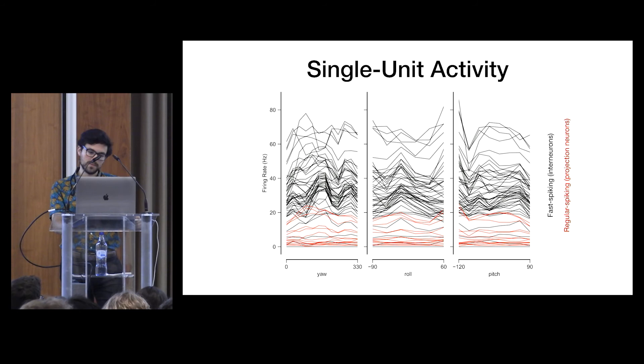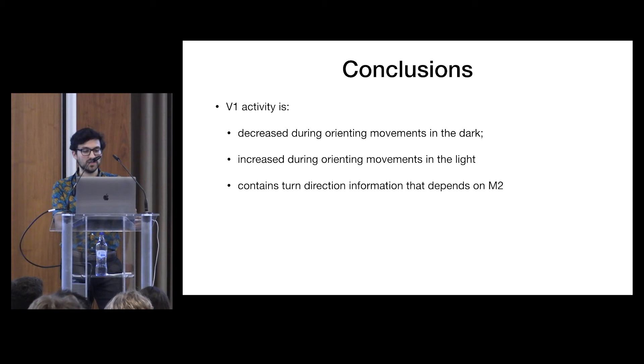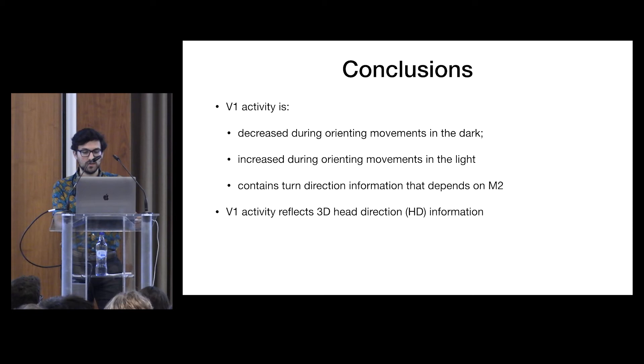So in conclusion, our V1 activity is, we can see that it's decreased during orienting movements in the dark. It's increased during orienting movements in the light. It contains turn direction information that depends somehow on secondary motor cortex. At the same time, V1 activity reflects the 3D head direction information as well, both in the dark and in the light. And the question that remains is, what does V1 actually use these head direction information for? And we think that they might serve as a corollary discharge signal or a predictive coding signal, but more work remains to be done.